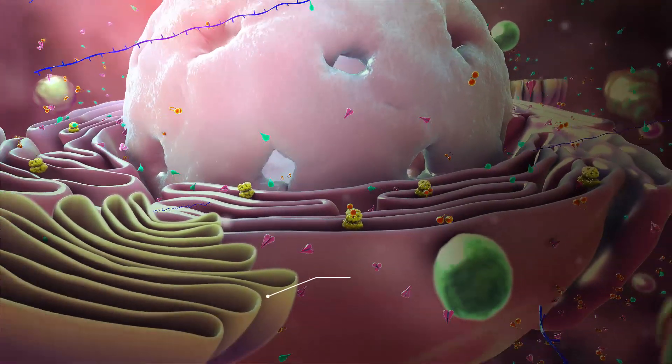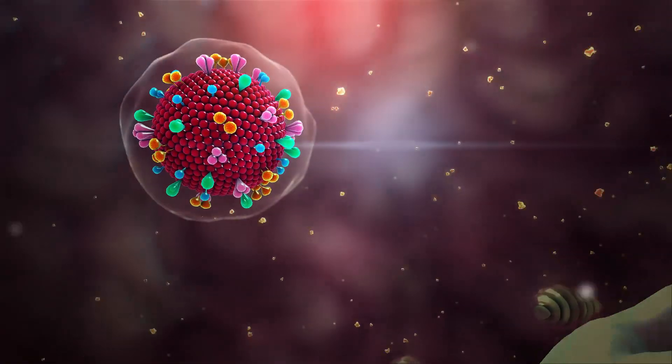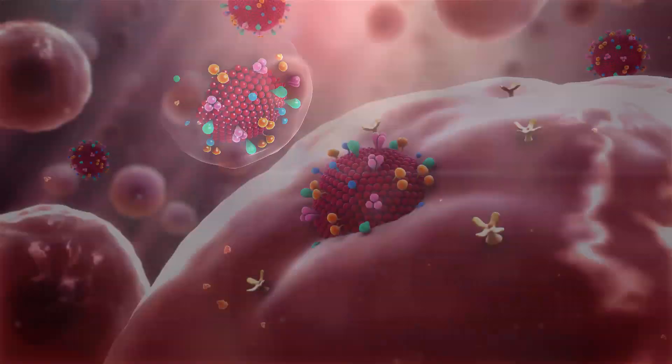After replication, the virus is carried by the Golgi bodies out of the cell in a process known as exocytosis, so that it can infect other cells.